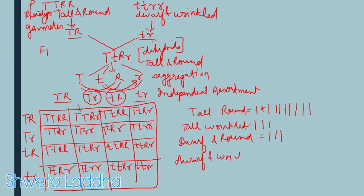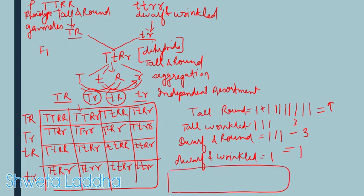So the phenotypic ratio is 9:3:3:1. Whenever you carry out a dihybrid cross, you get the phenotypic ratio as 9:3:3:1. The genotypic ratio is 1:2:2:4:1:2:1:2:1. You can practice this at home again and observe.